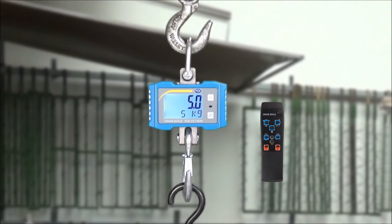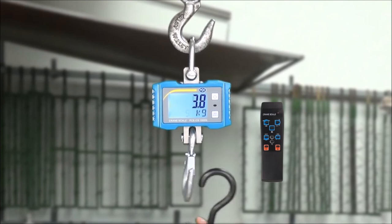An interesting function of the crane scale is also the SUM function. Means that I can add together several weighings in succession. We have 5 kilogram. I press the ACC key on the remote. This is shown short in the display, so that I know that this value is taken over in the internal memory. When I now unload the crane scale.